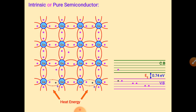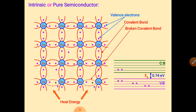If an electron has this amount of energy, it can easily move from the valence band to the conduction band. Electrons that are free from any binding energy are called valence electrons. When a covalent bond breaks, the electron is freed. If any covalent bond has only one electron, it is called a broken covalent bond, and that position represents a hole — behaving as positive charge.